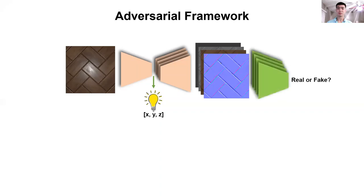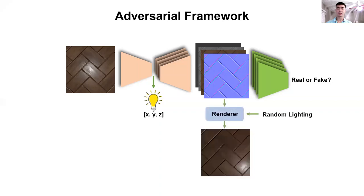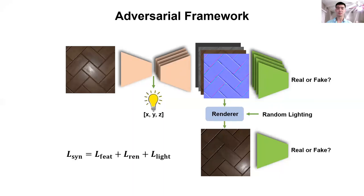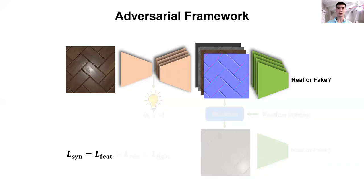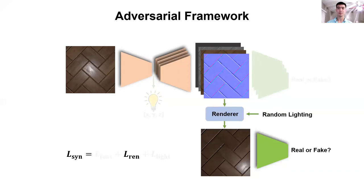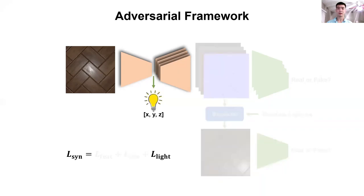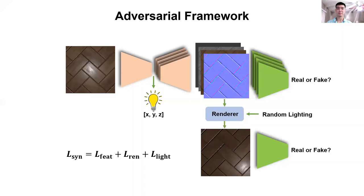We train our network using four discriminators that determine whether the output feature maps are real or fake. Additionally, we use the estimated parameters to re-render an image with a random light position, and use another discriminator to tell whether the re-rendered image is real or fake. In summary, we minimize the following loss for synthetic image training. The feature loss consists of adversarial loss as well as the L1 loss between estimated and ground truth feature maps. The rendering loss consists of adversarial loss, VGG loss, and L1 loss between re-rendered and ground truth images. Finally, we compute the L1 loss between estimated and ground truth light position.